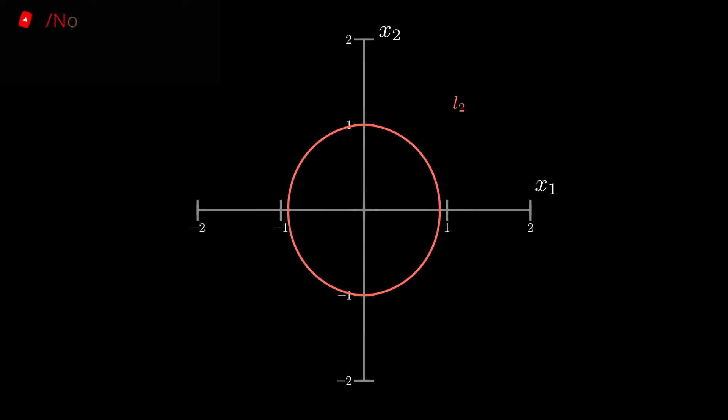But what happens when we do it for the L2 norm? Any guesses? Well, it becomes a circle. And it's actually easy to guess because in the equation of the circle in 2D there are square terms, right? And in the formula of L2 norm there are squares. So it makes sense, right? Every point on the circumference of the circle has L2 norm as 1.